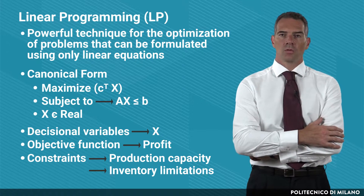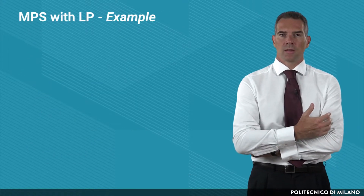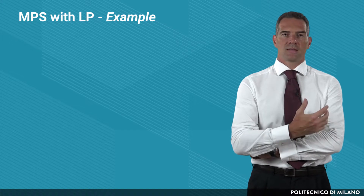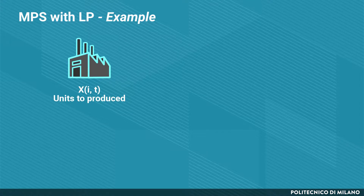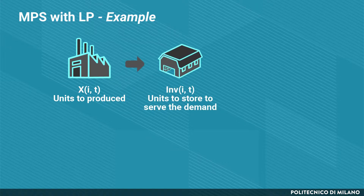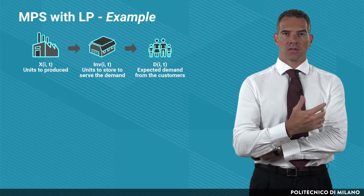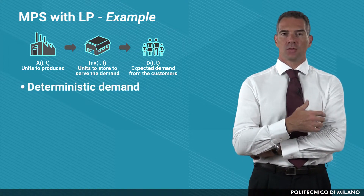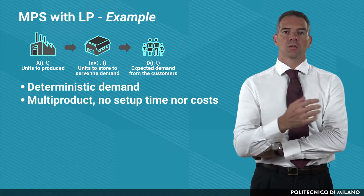Usually, the x decision variable belongs to the real numbers. To illustrate the application of linear programming to MPS, let me use an example. Let's assume a very simple supply chain in which you have a manufacturing plant in which products i have to be produced in a set of given periods t, plus a warehouse in which inventories of item i are stored in order to serve the demand coming from the market, which is perfectly known. The demand is deterministic and we are dealing with a multi-product situation.